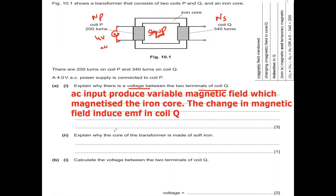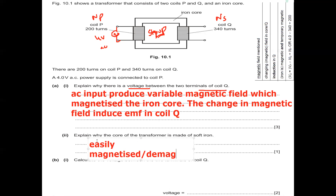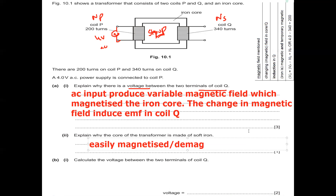The question then asks why the core of the transformer is made of soft iron rather than steel. Soft iron can easily be magnetized and demagnetized, allowing the magnetic field to change readily. Steel is difficult to magnetize, and once magnetized it cannot be easily demagnetized.